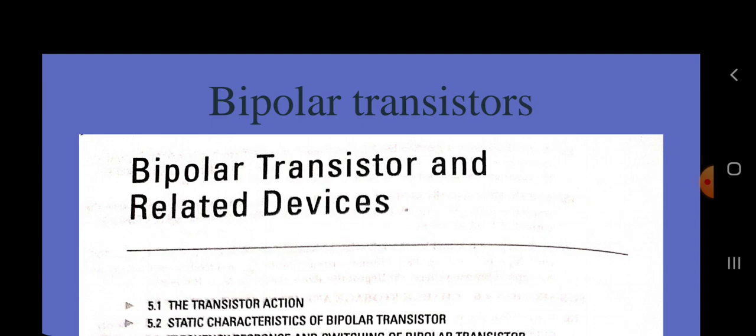The transistor — contraction for transfer resistance — is a multi-junction semiconductor device. Normally, the transistor is integrated with circuit elements for voltage gain, current gain, signal power gain, etc. The bipolar transistor, also called the bipolar junction transistor BJT, is one of the most important semiconductor devices. It has been used extensively in high-speed circuits, analog circuits, and power applications.